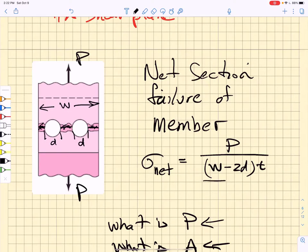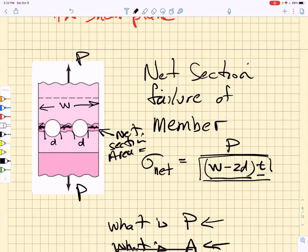by this net section area, W minus 2D times T. Well, in this case, it's because I have two bolts. If I had N bolts across this section, I would use N in there instead.